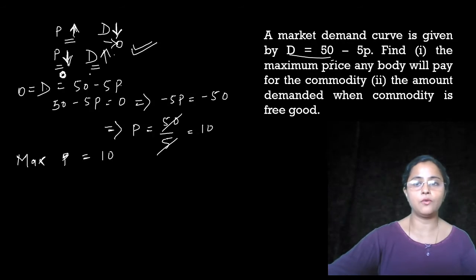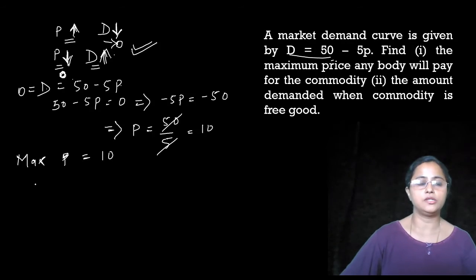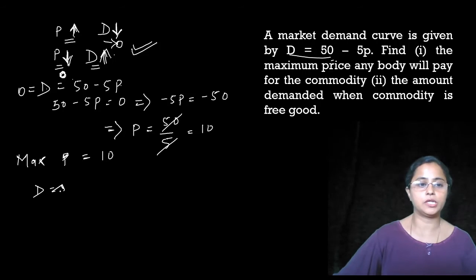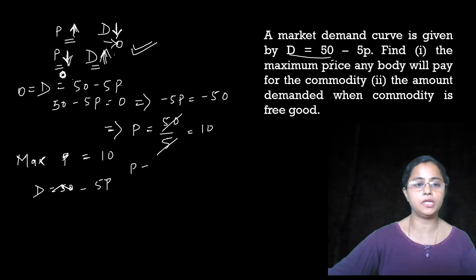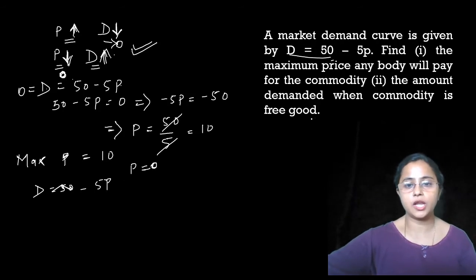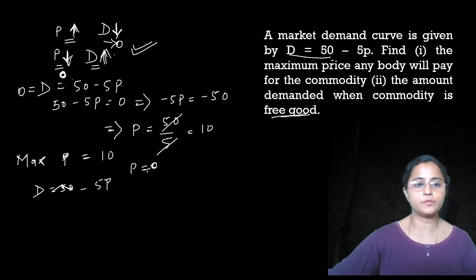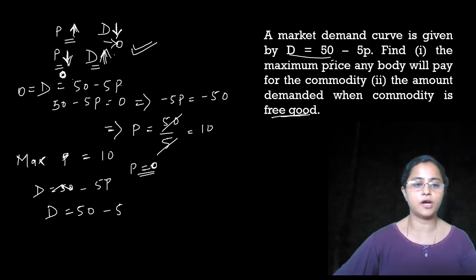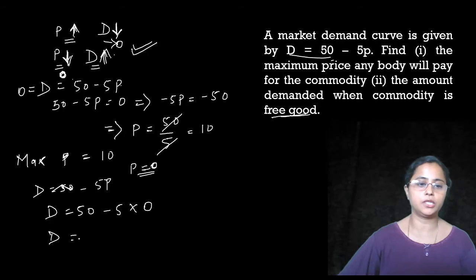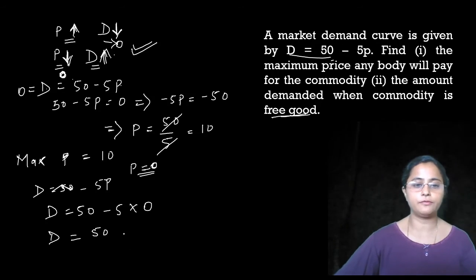How much demand will there be when the price is zero? In our equation, we write P equals 0. So: D equals 50 minus 5 into 0. That means demand equals 50 units. So when the commodity is free, the demand will be 50 units.